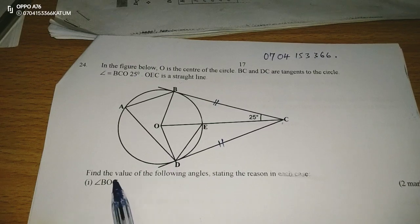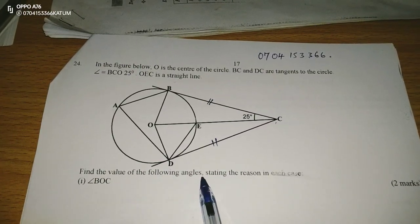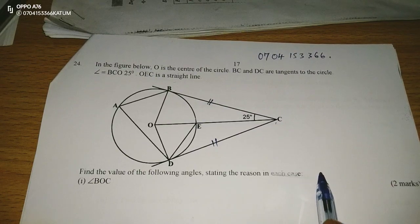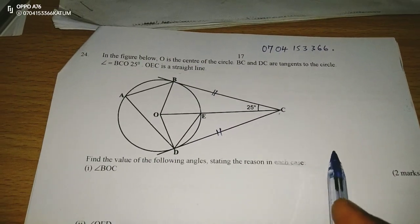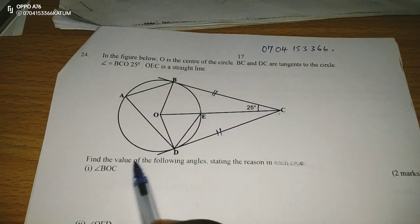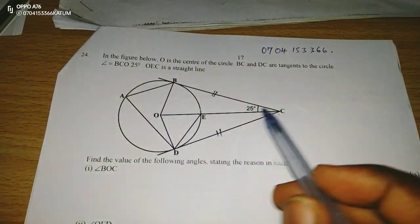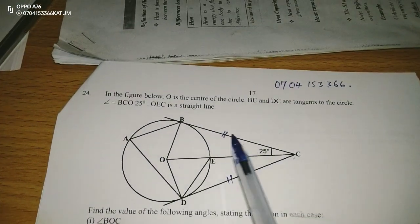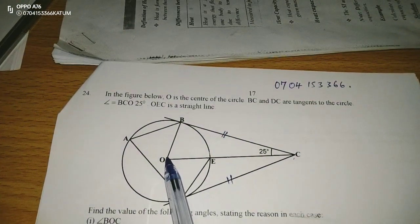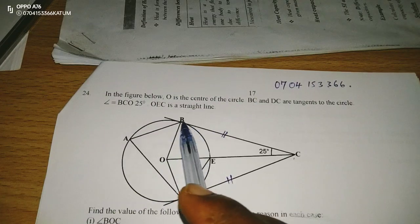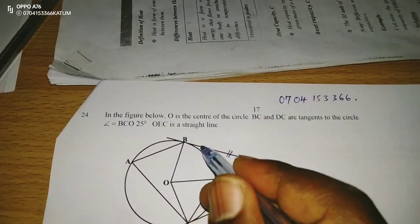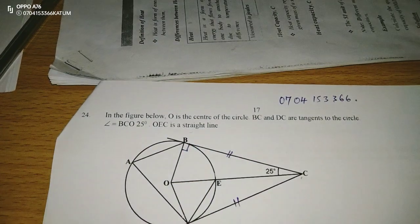We are now told to find the values of the following angles, stating the reason in each case. The first angle to be found is BOC. We should know that when a radius like OB makes an angle with a tangent, that angle should be a right angle. So we have 90 degrees here.